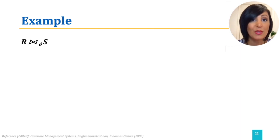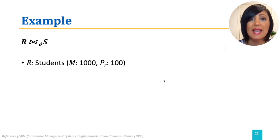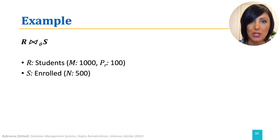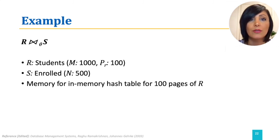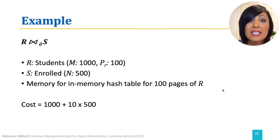Back to the students and enrolled relations example. Assume we choose R to be our students table with 1000 pages and 100 tuples per page, and S to be our enrolled table with 500 pages. Additionally, assume we have memory for an in-memory hash table for 100 pages of R. Using these numbers, the total cost is M — which is 1000 — plus N times 1000 divided by 100, which is 10, giving a total of 6000 IO operations.